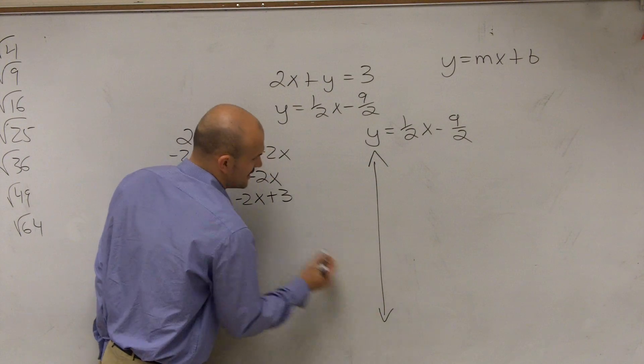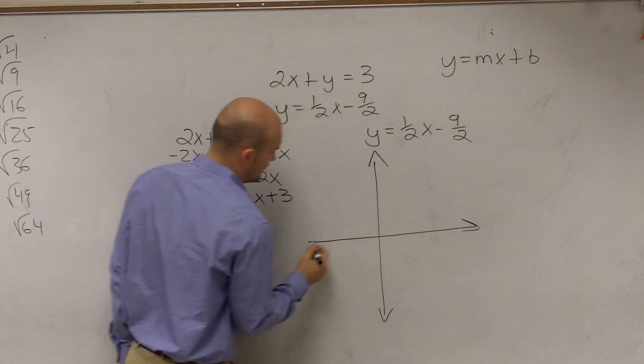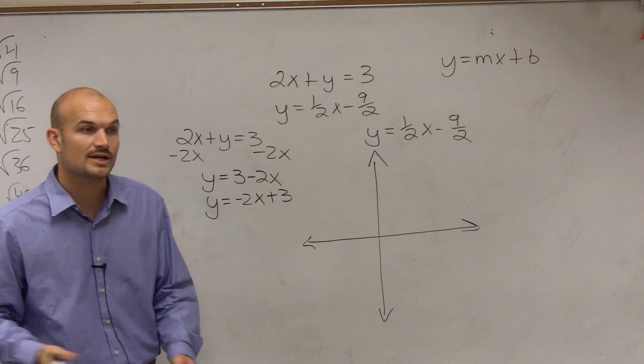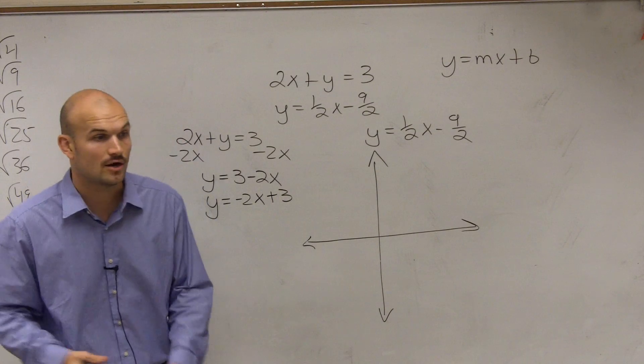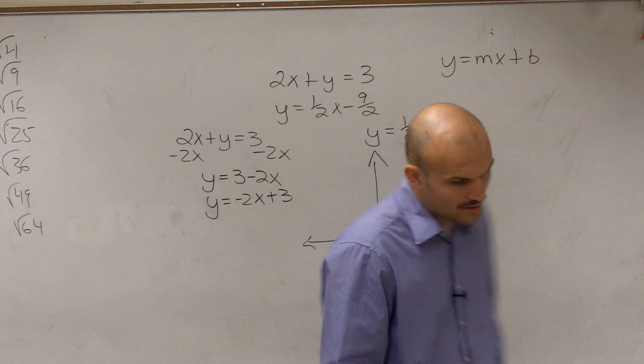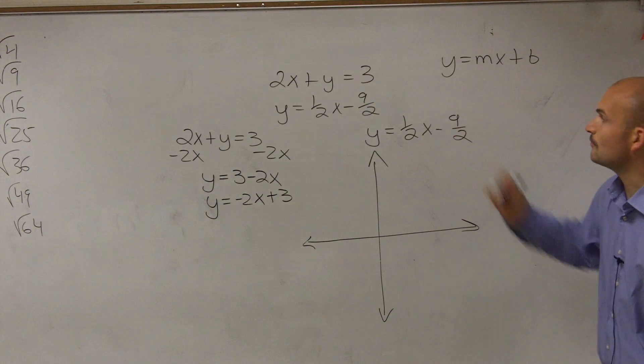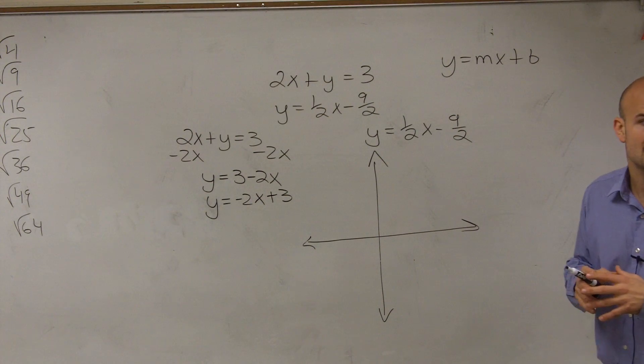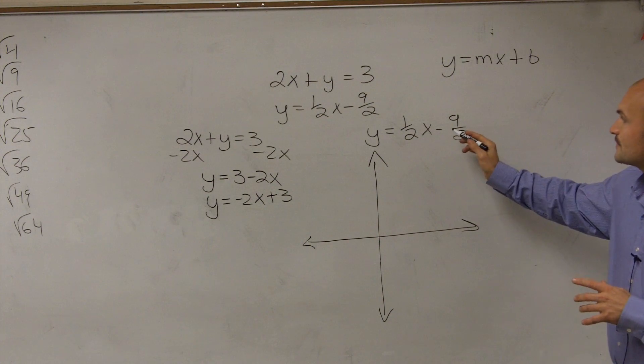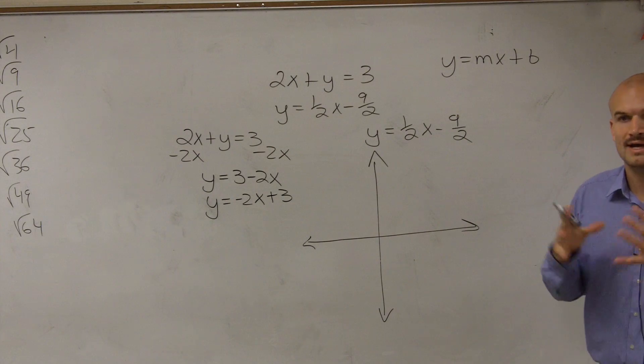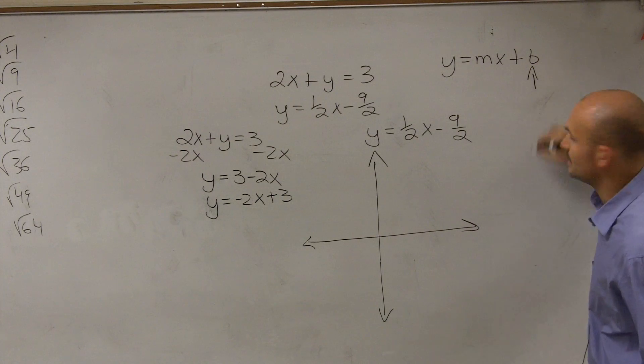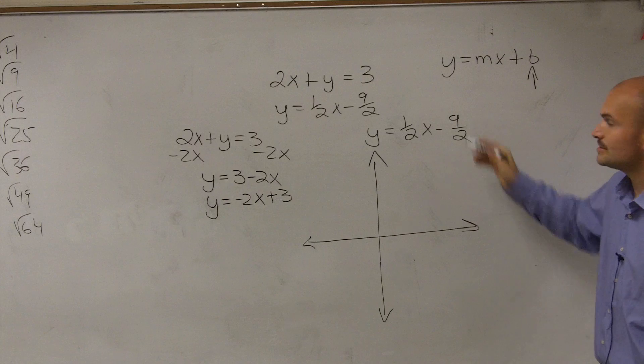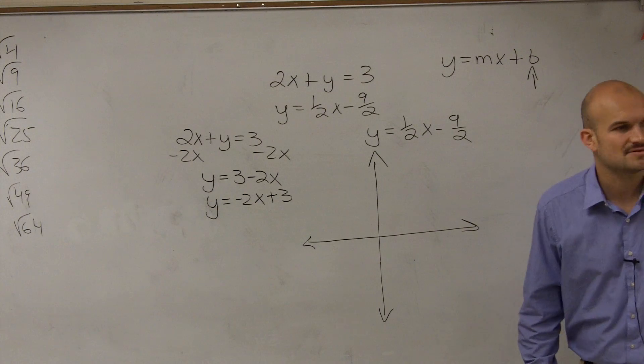So let's go ahead and graph this. To solve by graphing, we need to graph them and determine where their intersection point is, if there is one at all. So what I look at here is y = 1/2x - 9/2. First thing we need to do is graph the y-intercept. That is your b, your constant.